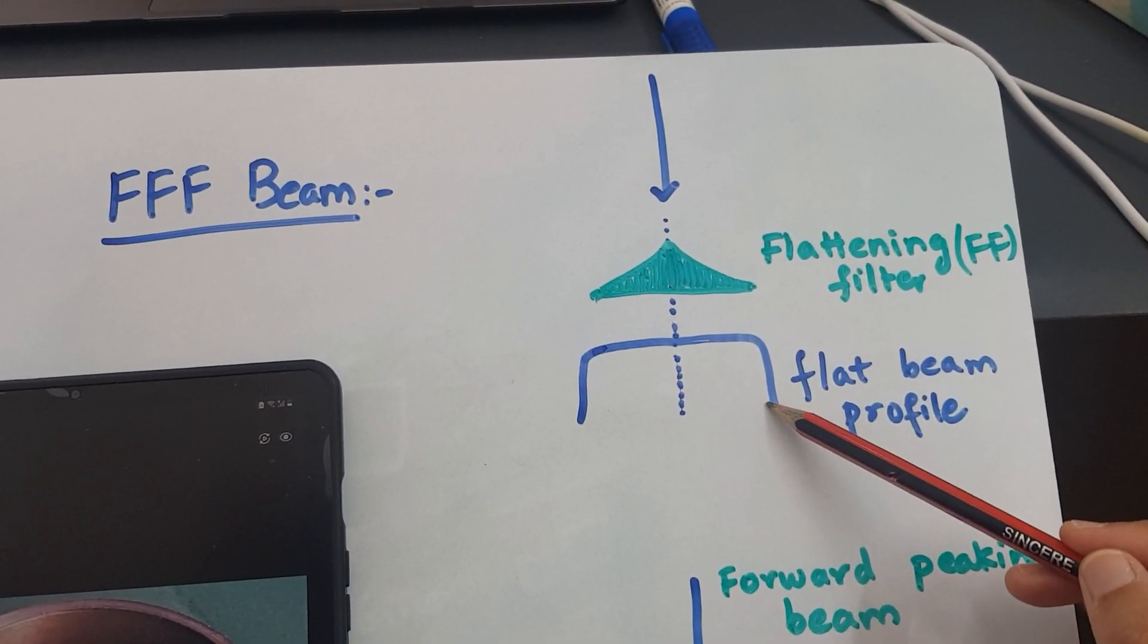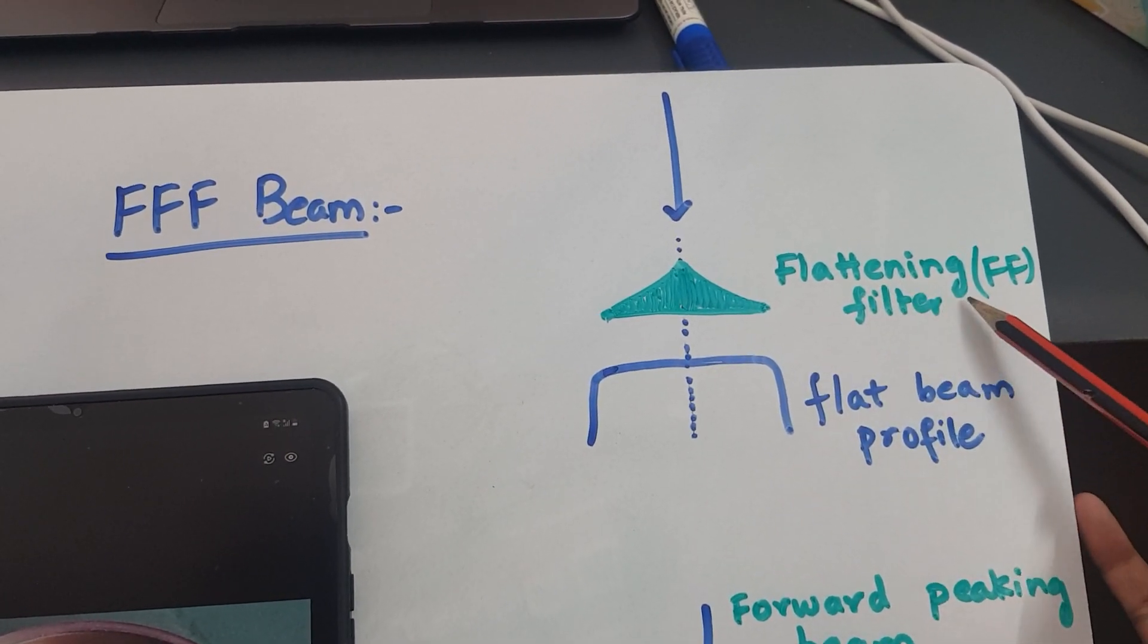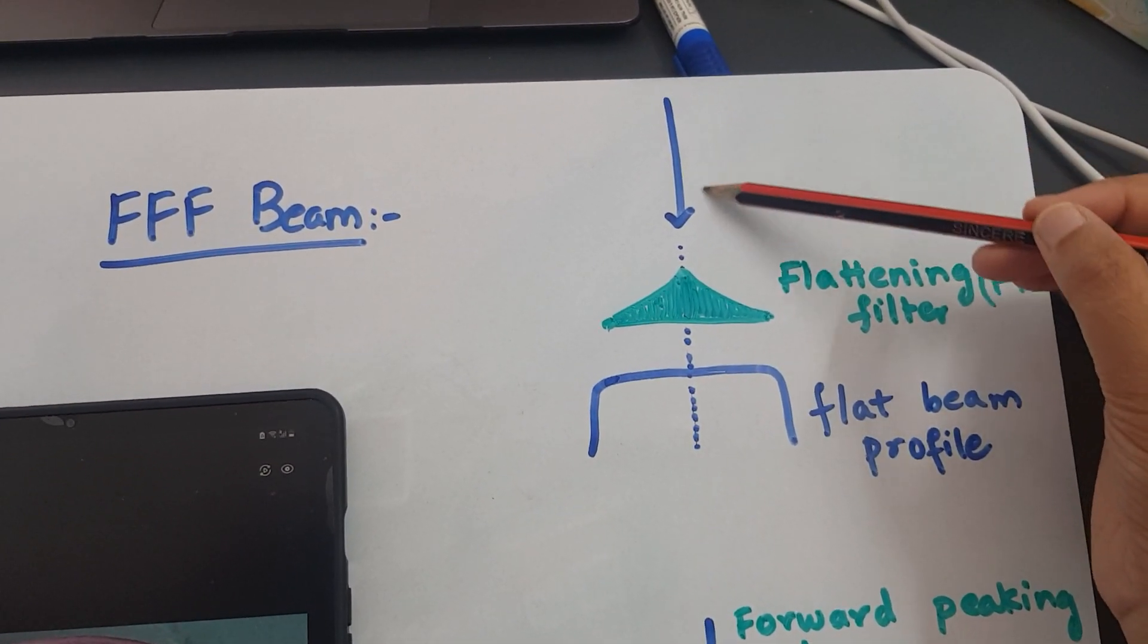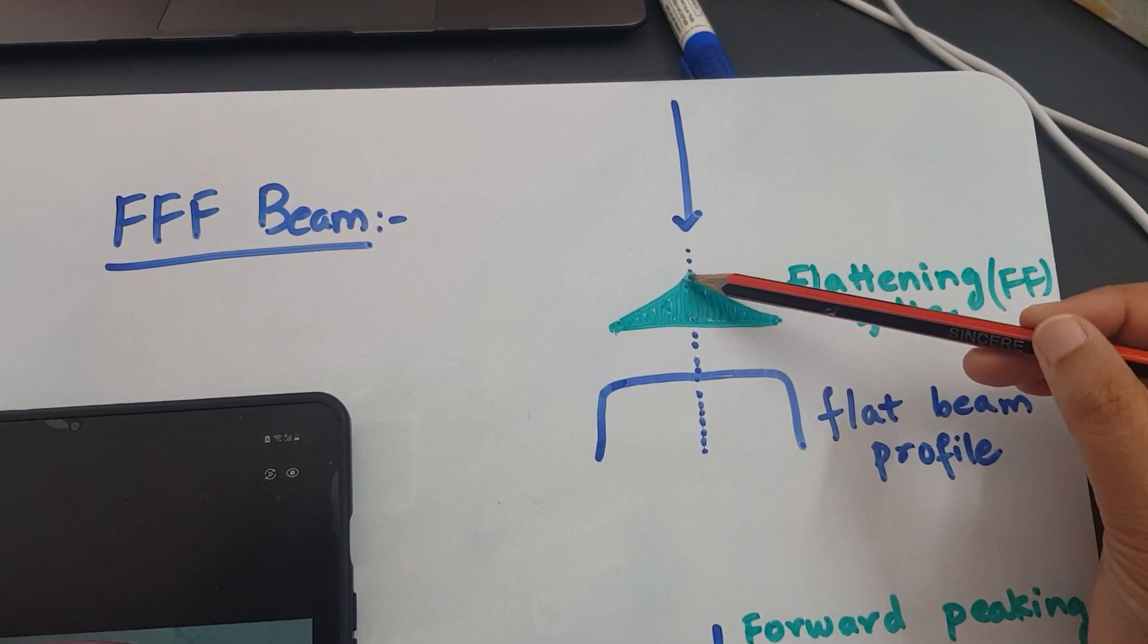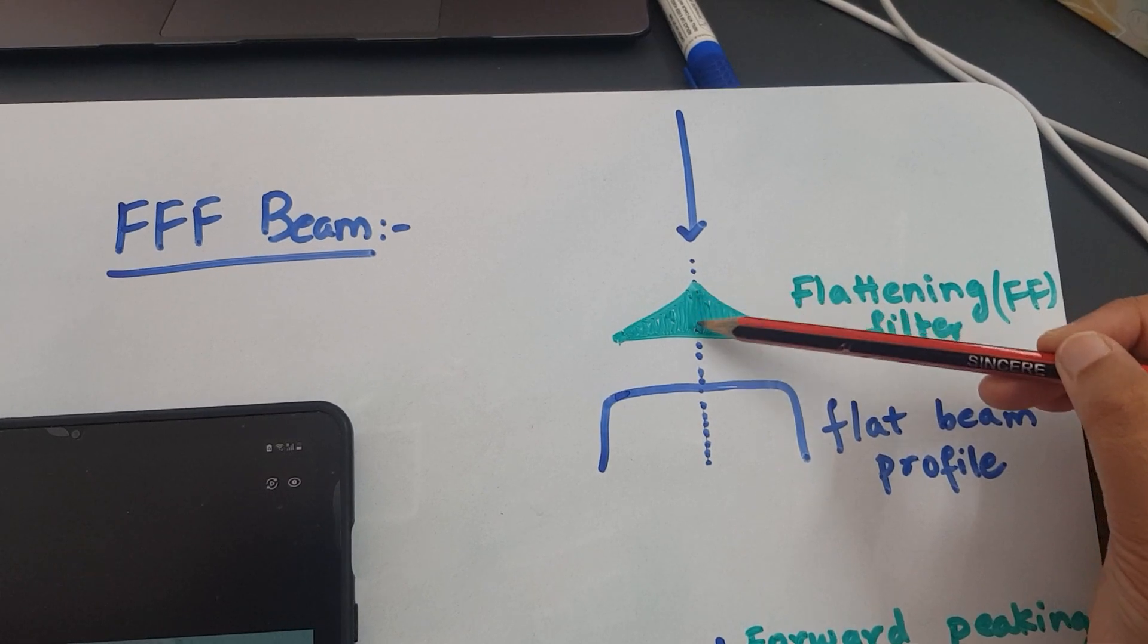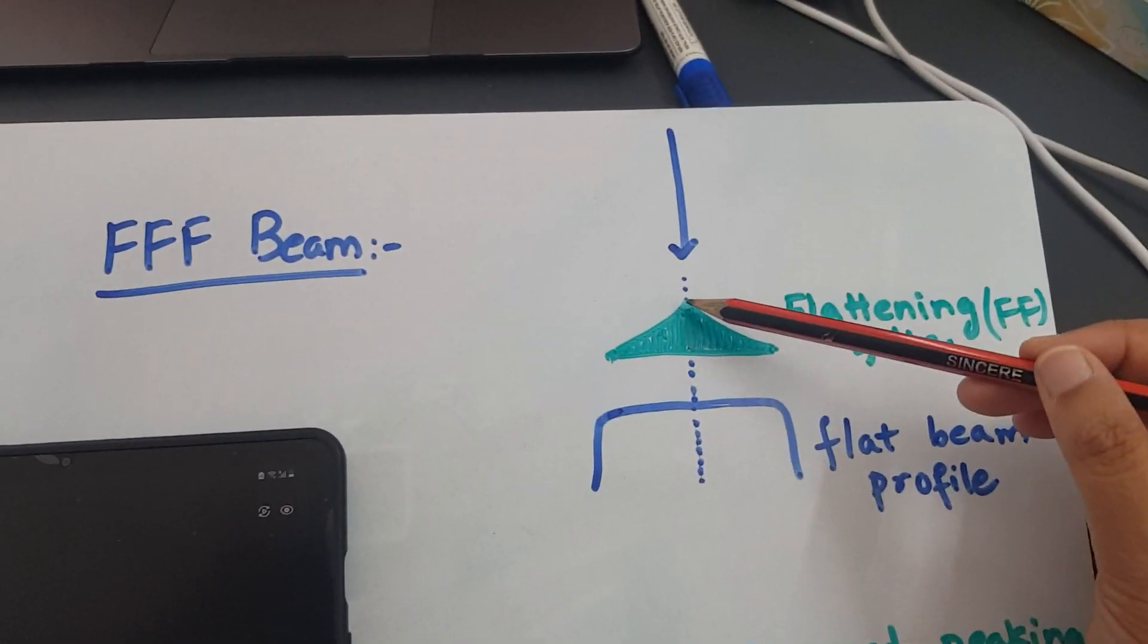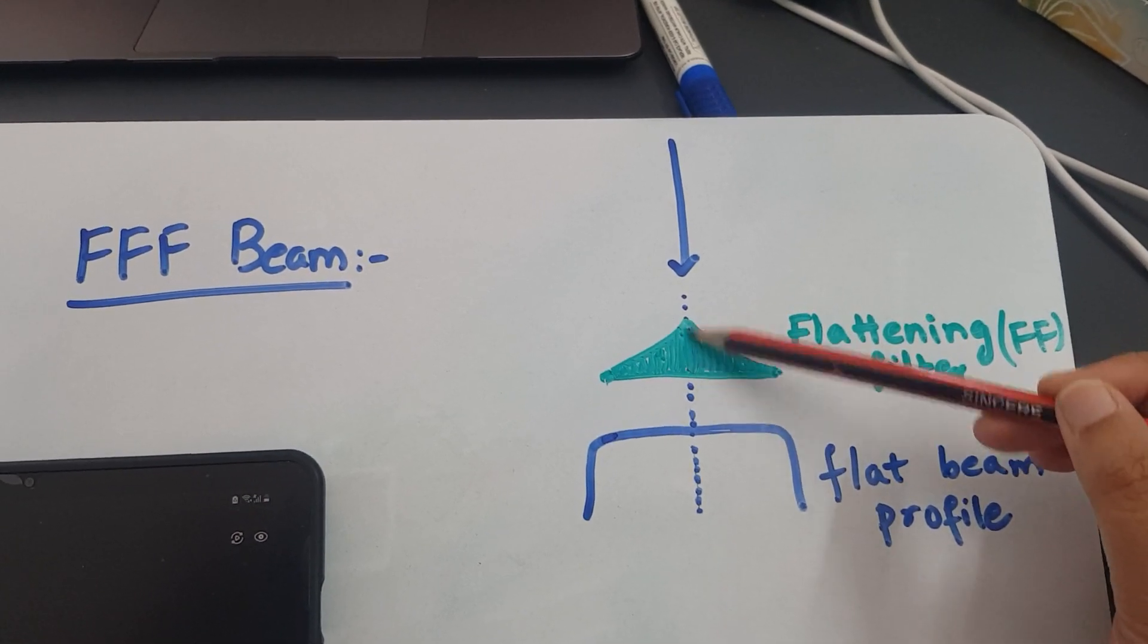This is how a normal flat beam profile looks like because we have used a flattening filter. There will be a forward peaking beam, and then this is the thicker end of the flattening filter and this is the thinner end. So here the attenuation for the beam will be more, here it will be less.